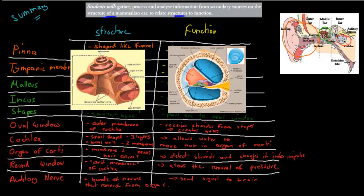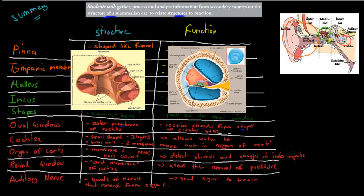Then the inner ear — this is where most of the stuff happens. We've got the oval window. The oval window was the part that gets pushed onto by the stapes, so it's a membrane — it's the outer membrane of the cochlea. It receives a stimulus from the stapes, the smallest bone, and by doing so it will create a wave and create pressure inside the actual cochlea. That pressure will basically make the hair cells start to move.